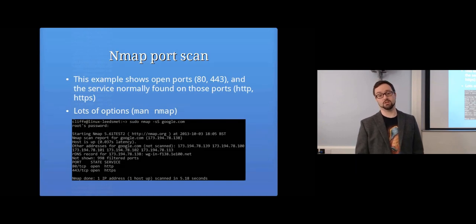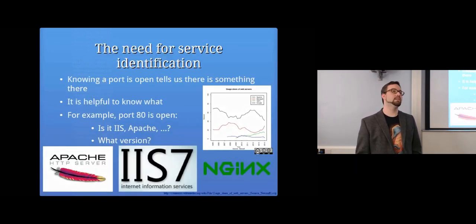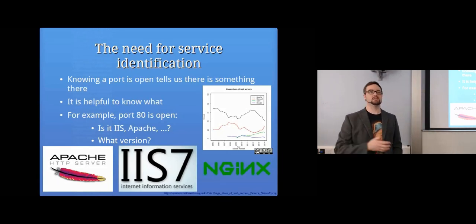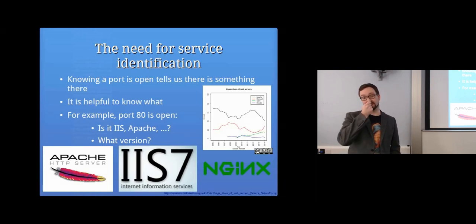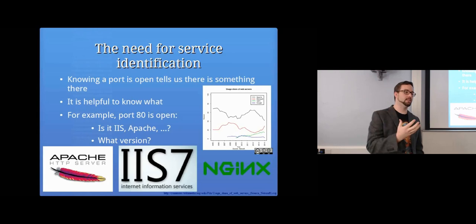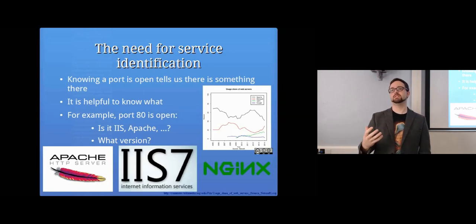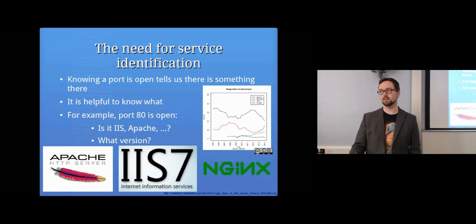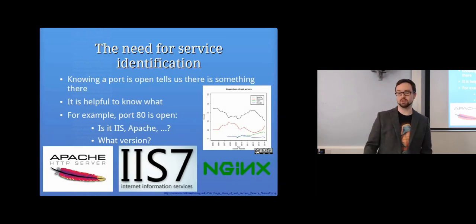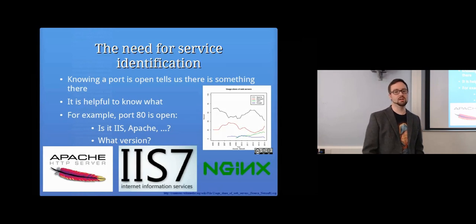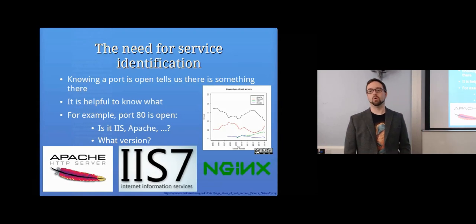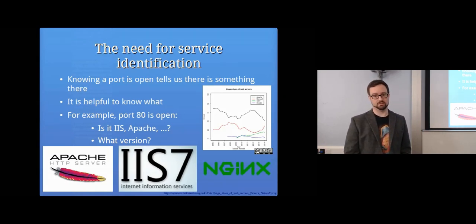Running a SYN scan against Google, nmap returns that ports 80 and 443 are open — confirming a web server is running. However, knowing there's a web server doesn't tell us everything. Most exploits require knowing the exact version of the software, or at least the type of server — whether it's IIS, Apache, or something else — and what version is running.